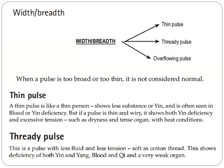What is a thin pulse? A thin pulse is like a thin person — it shows less substance or yin, and is often seen in blood or yin deficiency. But if a pulse is thin and wiry, it shows both yin deficiency and excessive tension, such as dryness and a tense organ with heat conditions.